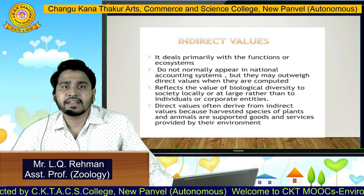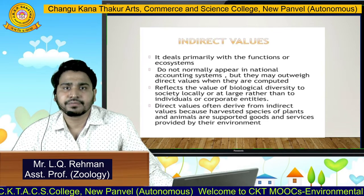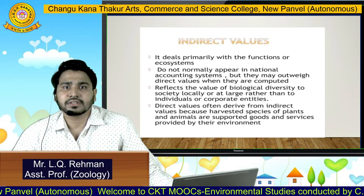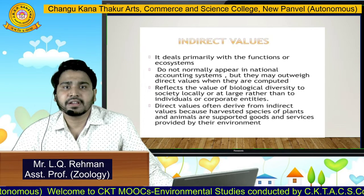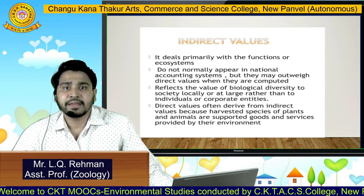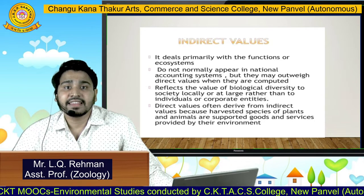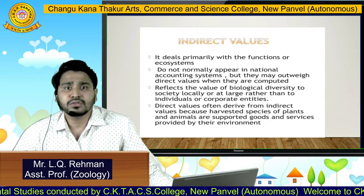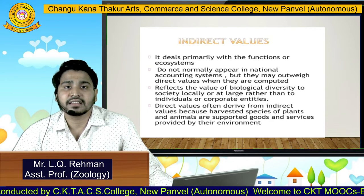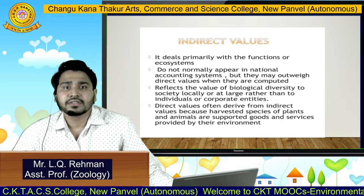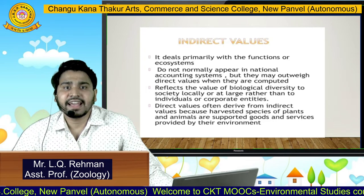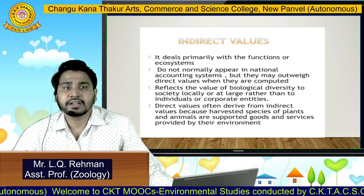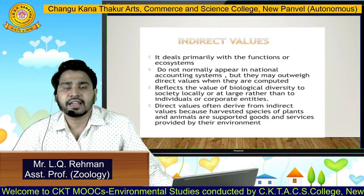The second type is indirect values. Indirect values deal primarily with the functions of the ecosystem. They do not normally appear in national accounting systems, but they may outweigh direct values when computed. They reflect the value of biological diversity to society locally or at large, rather than at individual levels. Direct values are often derived from indirect values because harvested species of plants and animals are supported by goods and services provided by their environment.